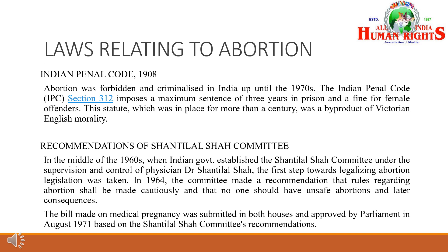Laws Relating to Abortion in India. Indian Penal Code 1908: Abortion was forbidden and criminalized in India up until the 1970s. IPC Section 312 imposes a maximum sentence of three years in prison and a fine for female offenders. This statute, which was in place for more than a century, was a byproduct of Victorian English morality.